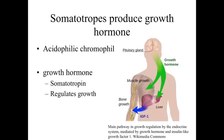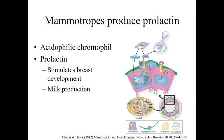The cells secreting growth hormone are acidophilic chromophils called somatotropes, because growth hormone is also known as somatotropin. Growth hormone is associated with regulating growth within the body, with a number of targets responding to it. The cells secreting prolactin are known as mammotropes — a second category of acidophilic chromophils. They secrete either growth hormone or prolactin. Prolactin is involved with stimulating breast development as well as stimulating milk production.